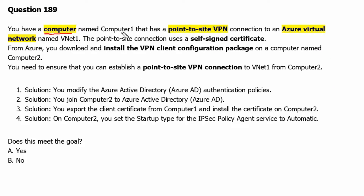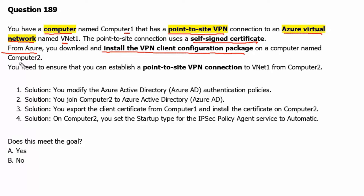Question 189. You have a computer named Computer1 that has a point-to-site VPN connection to an Azure Virtual Network named VNet1. The point-to-site connection uses a self-signed certificate from Azure, meaning the authentication type is Azure Certificate. You download and install the VPN client configuration package on a computer named Computer2. You need to ensure that you can establish a point-to-site VPN connection to VNet1 from Computer2.